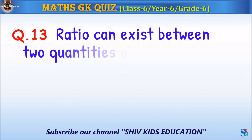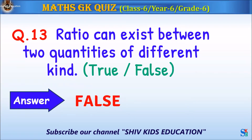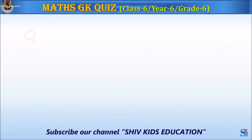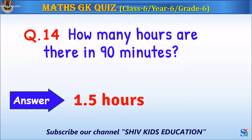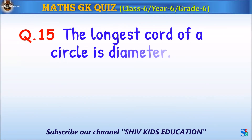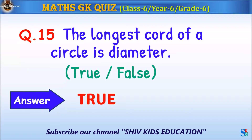Question 13: Ratio can exist between two quantities of different kind — true or false? The answer is false. Question 14: How many hours are there in 90 minutes? The answer is 1.5 hours. Question 15: The longest chord of a circle is the diameter — true or false? The answer is true.